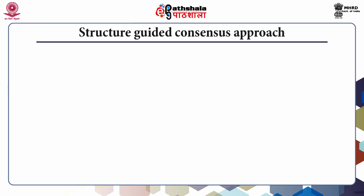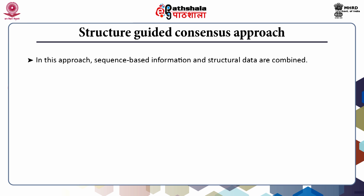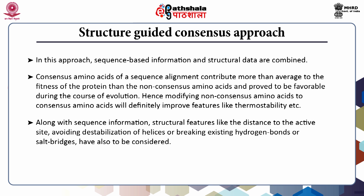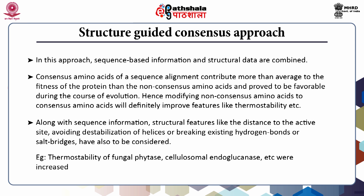In the structure-guided consensus approach, sequence-based information and structural data are combined. Consensus amino acids of a sequence alignment contribute more than average to the fitness of the protein compared to non-consensus amino acids and proved to be favorable during the course of evolution. Hence, modifying non-consensus amino acids to consensus amino acids will definitely improve features like thermostability. Along with sequence information, structural features like distance to the active site, avoiding destabilization of helices, or breaking existing hydrogen bonds or salt bridges also have to be considered. For example, thermostability of fungal phytase and cellulosomal endoglucanase were increased using this approach.